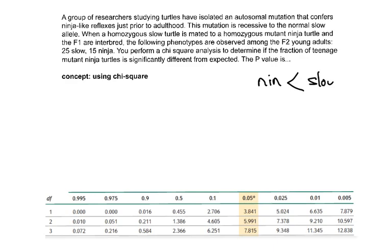In this case, it's slow, and whenever I see a normal or wild type allele, I'll just give it a plus for shorthand. The cross is a homozygous slow turtle, so let's call it plus-plus, is mated to a homozygous ninja, call it nin-nin, and then we're told that the F1 are interbred.